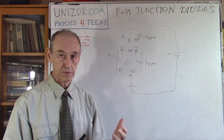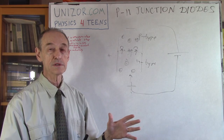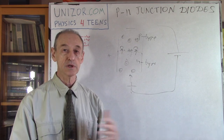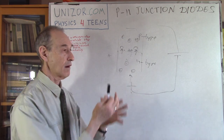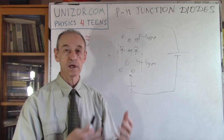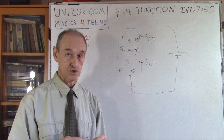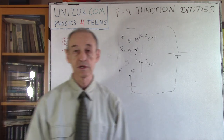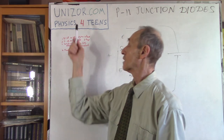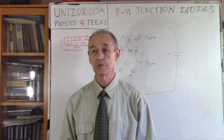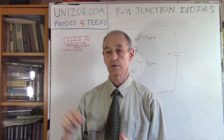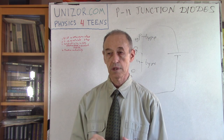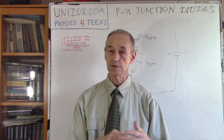We are not talking about the technology of how to introduce these impurities or how to make this junction — that is a technological matter not covered in this course. We are talking about the principle: covalent bonds are strong, electrostatic attraction and repulsion are strong, and they work in conjunction with each other. That's how the whole thing is made. I suggest you read the notes for this lecture — on unizor.com go to Physics for Teens, Electromagnetism, and then the semiconductor section covering electronics related to semiconductors.